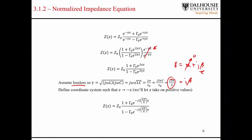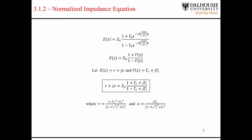We end up with the equation for the input impedance in a different form, where we define the reflection coefficient as the load reflection coefficient multiplied by this exponential. We'll see how this is useful in a minute — it relates to rotations along the Smith chart. What I'm trying to explain here is where the curves on the Smith chart come from.